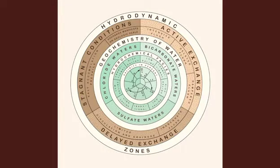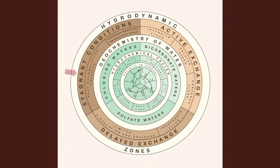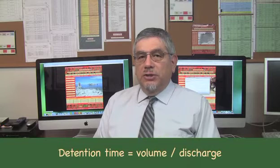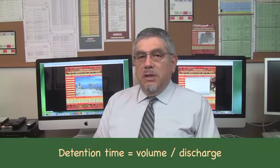Hydrodynamic and hydrochemical gradients affect the distribution and type of groundwaters. There are three hydrodynamic zones in groundwater flow: one, zone of active exchange; two, zone of delayed exchange; and three, zone of stagnant conditions. The type of exchange or replenishment rate is inversely related to the detention time — that is, locally, the ratio of volume to flux or discharge.